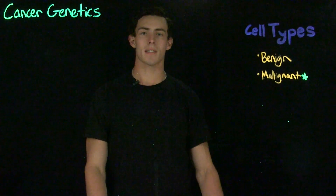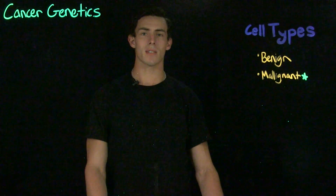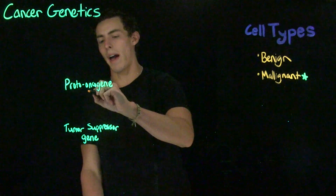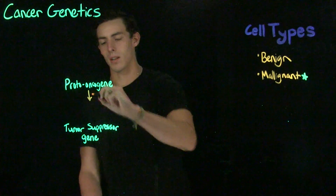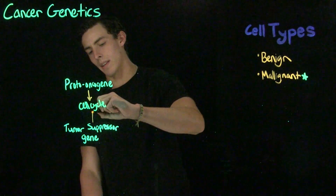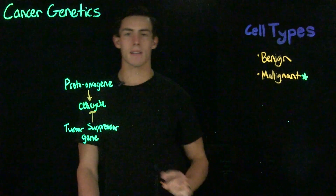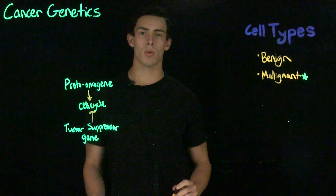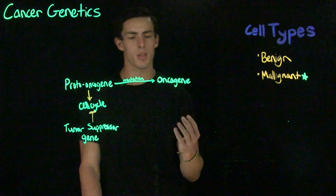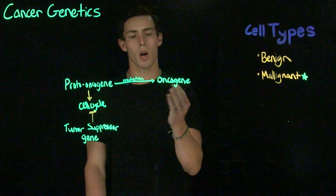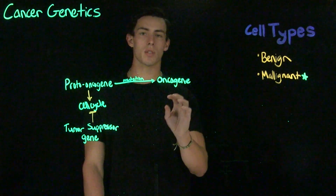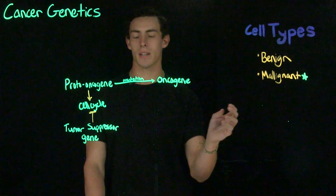On the genetic end, cancer can be caused by two types of genes: proto-oncogenes or tumor suppressing genes. Proto-oncogenes will activate the cell cycle, however, tumor suppressing genes are genes that will regulate the cell cycle to make sure that it doesn't get out of control. A mutation to a proto-oncogene forms what is called an oncogene. You might recognize the word "onco" from the term oncologist, which is a cancer doctor. An oncogene refers to a cancer-causing gene.